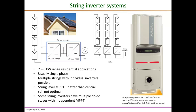Many string inverters now have a multiple DC-DC stage, offering multiple independent MPPT channels. For example, if you have two strings facing different directions on the rooftop — one east-facing and one west-facing — you can connect each string to independent channels of the inverter and have the advantage of independent maximum power tracking for each of those two strings.